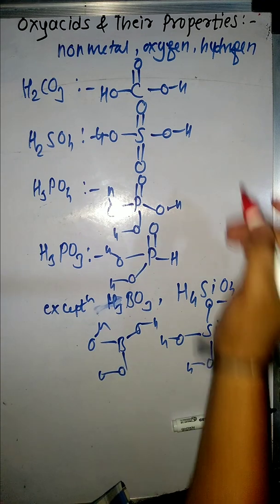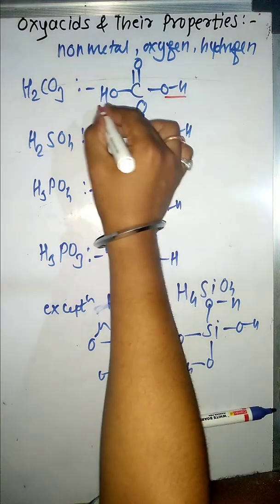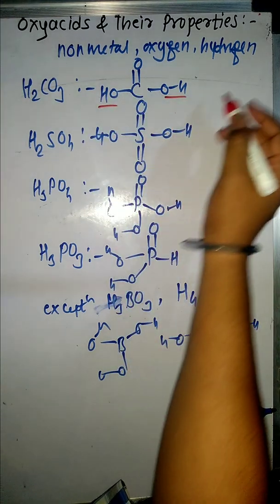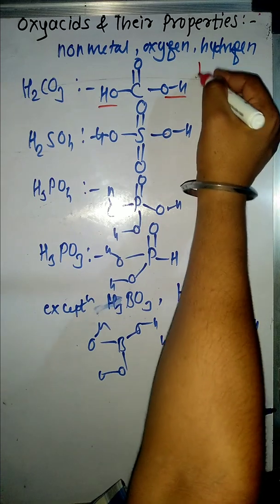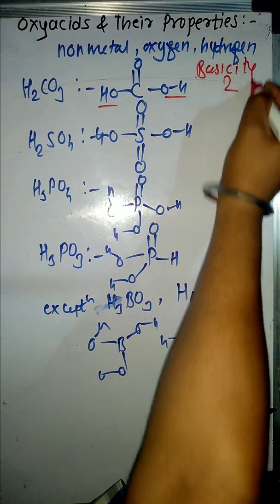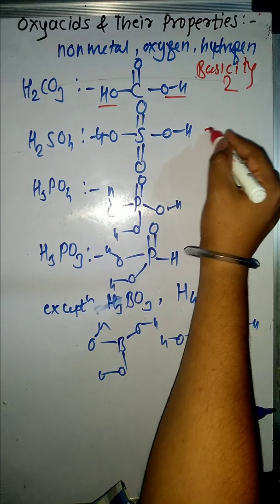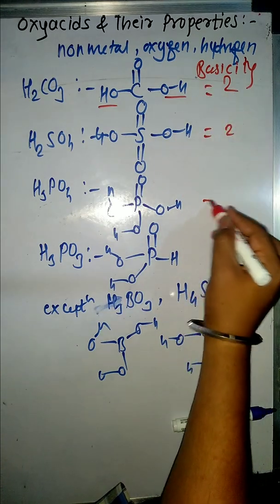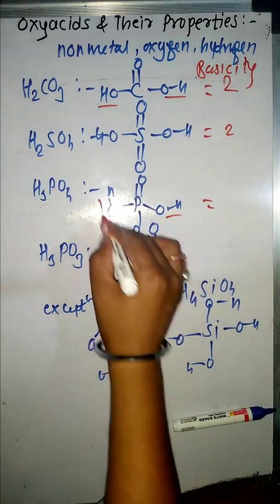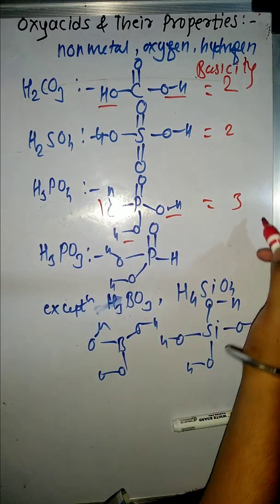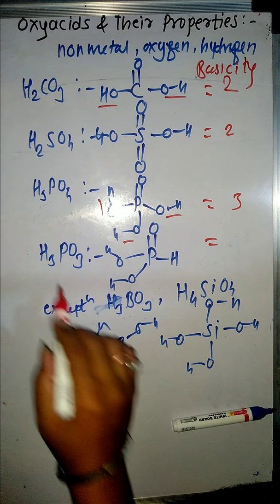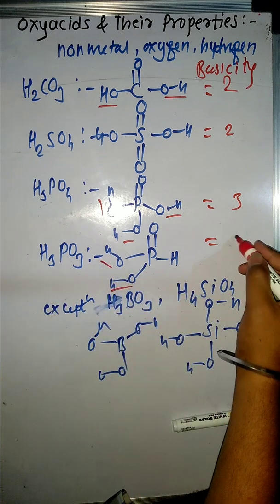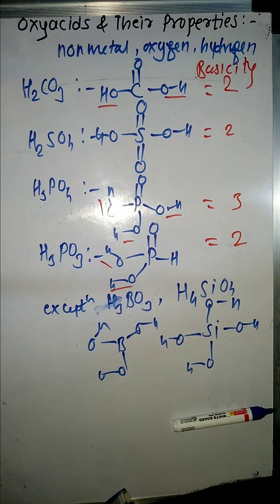Now for basicity of oxy acids: the number of OH bonds equals the basicity. For H2CO3 (carbonic acid), there are 2 OH groups, so basicity is 2 — it is a dibasic acid. For H2SO4, there are 2 OH groups, so basicity is 2. For H3PO4 (orthophosphoric acid), there are 3 OH groups, so basicity is 3 — it is a tribasic acid. For H3PO3, there are 2 OH groups, so basicity is 2 — it is a dibasic acid.